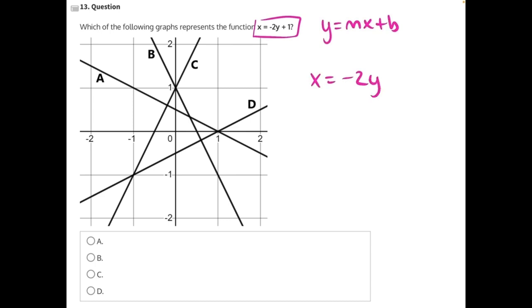So let's start by isolating our y variable. 1 is being added to y, so we need to do the opposite and subtract 1 from both sides, giving us x minus 1 equals negative 2y.